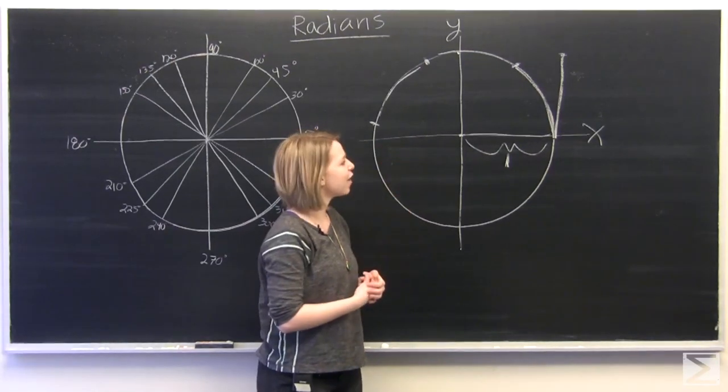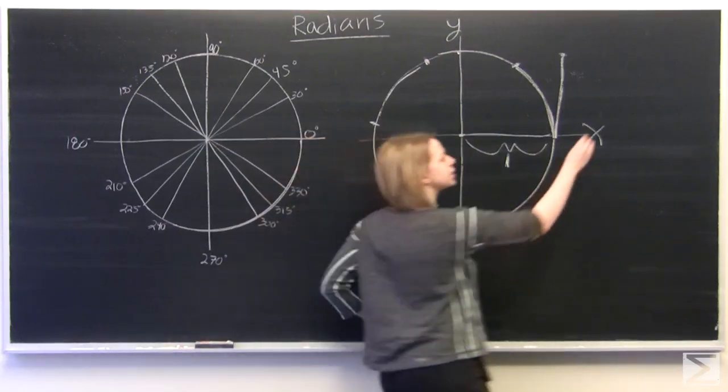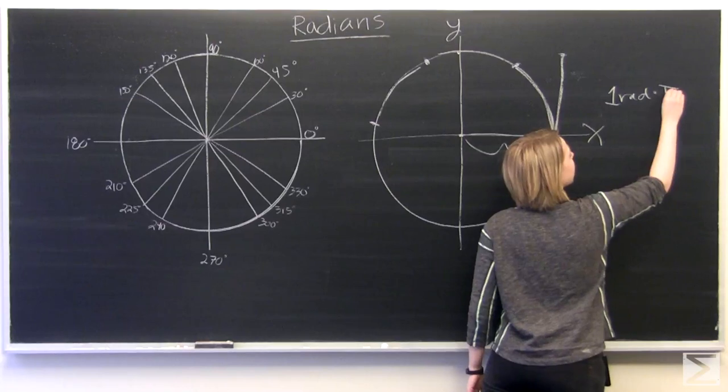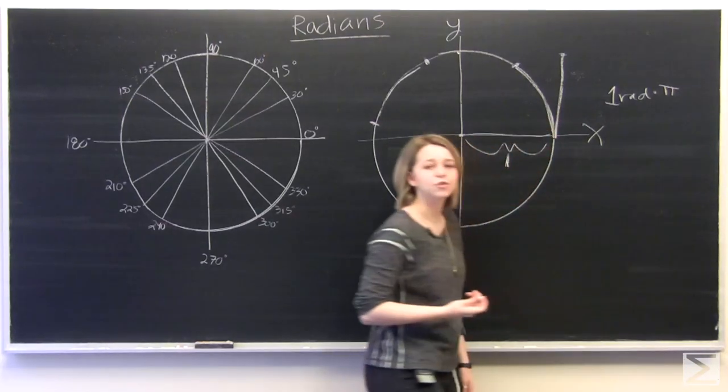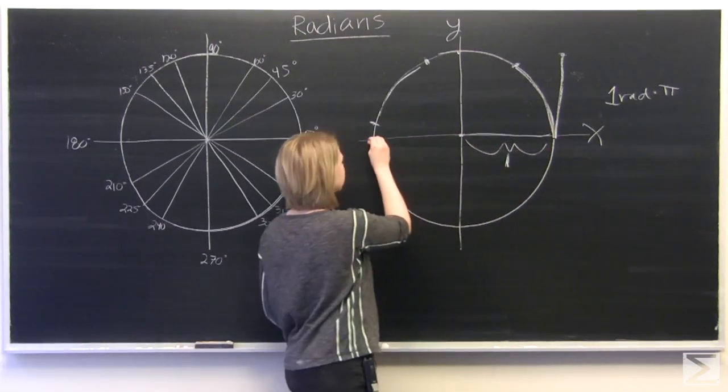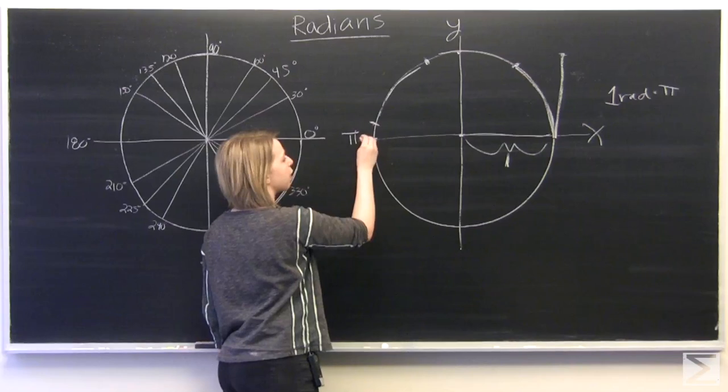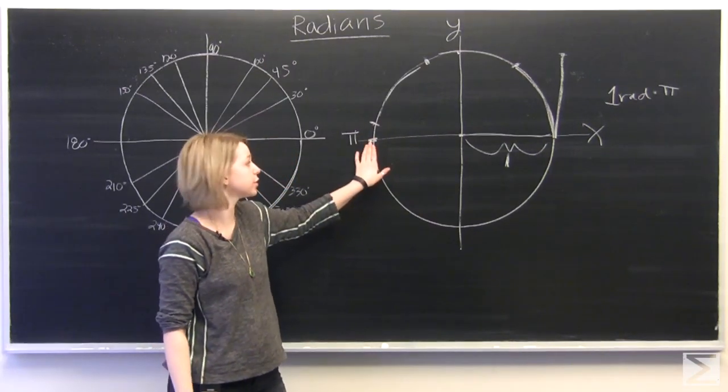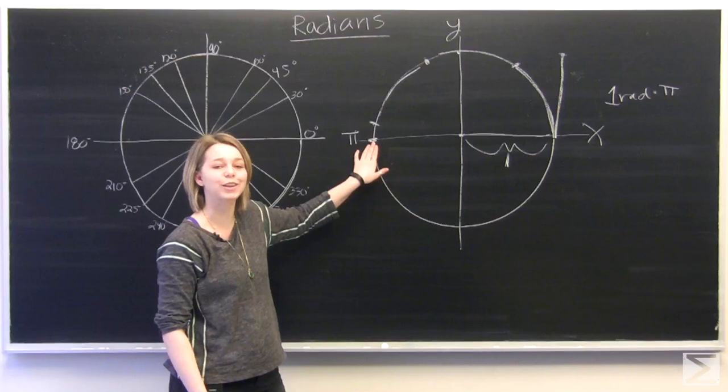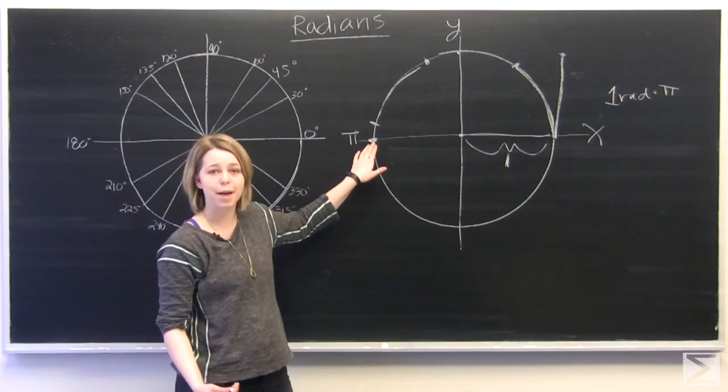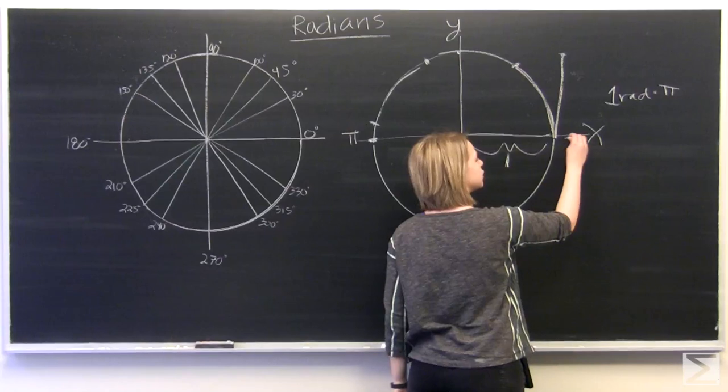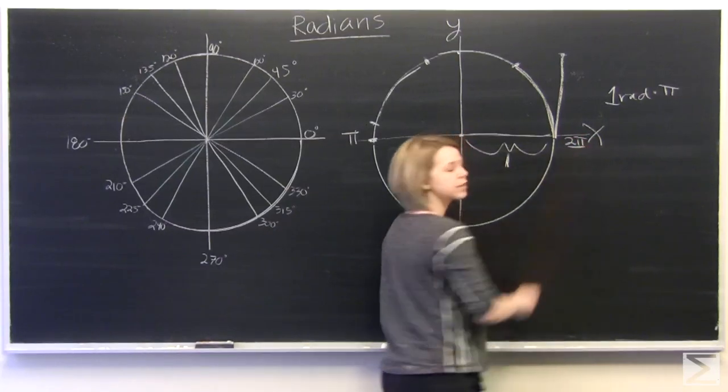But it turns out that if you multiply 1 radian by pi, so 1 radian times pi, you'll get approximately 3.14 radians. So we have pi radians over here, which is equal to exactly half of our circle's arc length. And if you multiply that by 2, you'd have 2 pi, which is equal to exactly the circumference of our circle.